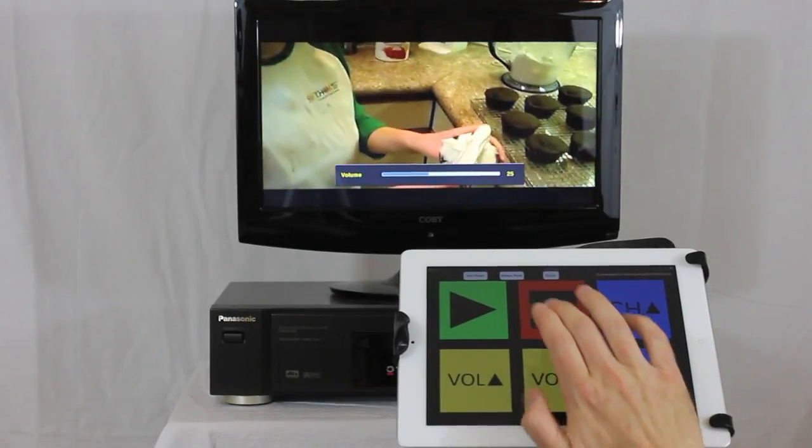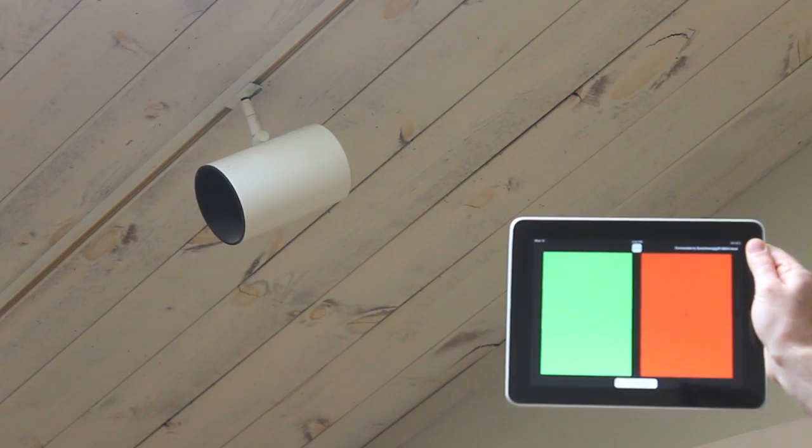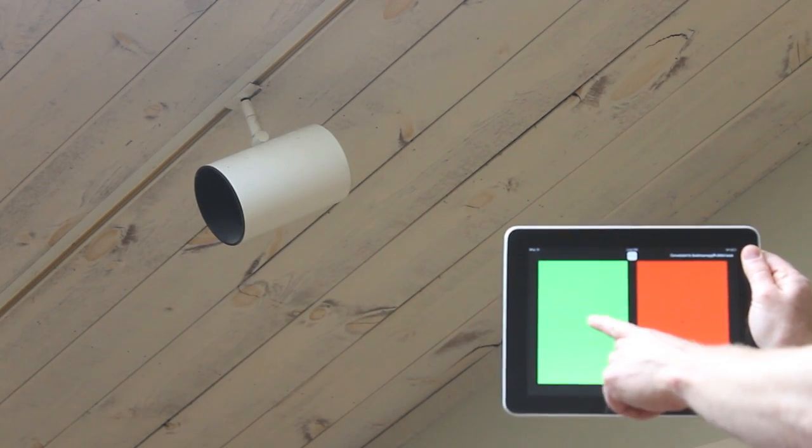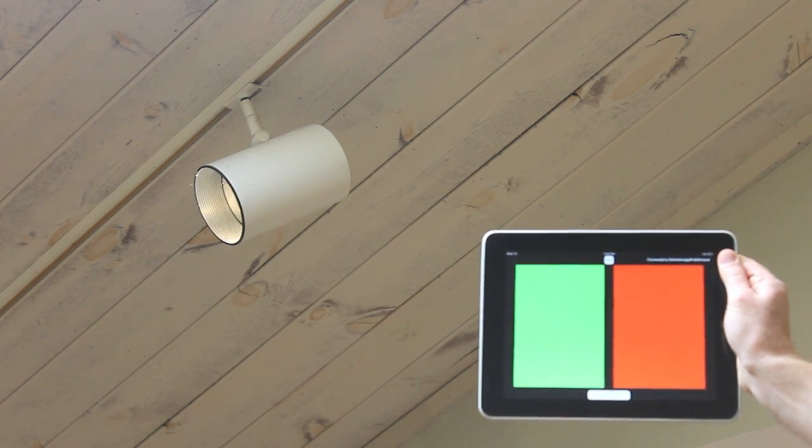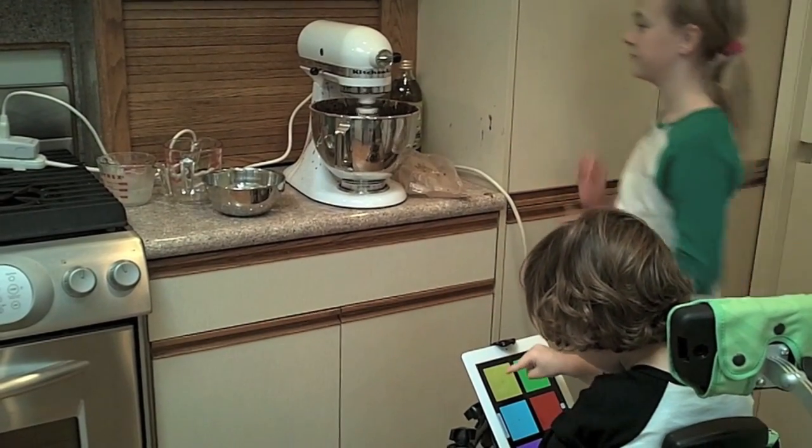In October, we released the Switchamajig IR. The IR is designed to work as a universal remote to access TVs and home theater systems. It can also work with Insteon systems to control lights and electrical plugs as well, but it also works great for many infrared-controlled toys.